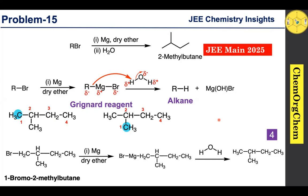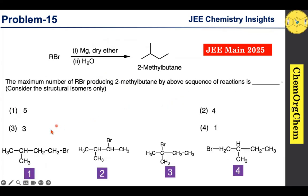As per our discussion, these four alkyl bromides can react with magnesium in dry ether followed by water to produce 2-methylbutane. Therefore, the correct option is option 2. Key takeaways: Grignard reagents are formed by reacting an alkyl halide with magnesium in dry ether, and they react with water to form alkanes. To solve this type of question, work backwards from the product to identify possible starting materials.